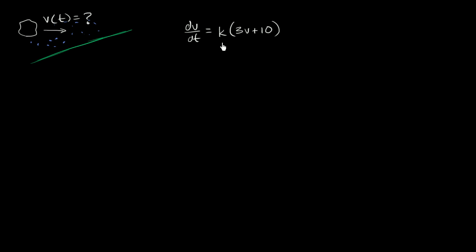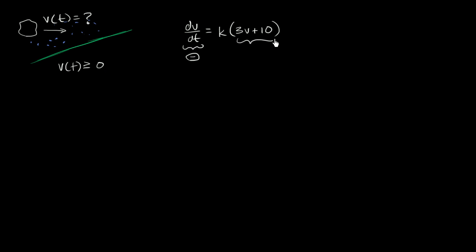Before we do that, what can we intuit about the value of K? Well, V of T is always going to be greater than or equal to zero. This asteroid has some positive velocity; it's just going to slow down and eventually come to a stop, assuming it doesn't get disintegrated by the atmosphere. So V of T is always positive. Since we're clearly slowing down, the rate of change of velocity needs to be negative. And if three V plus 10 is positive, then K should be negative. Let's keep that in mind as we solve for the particular solution.